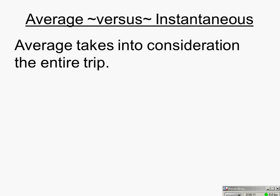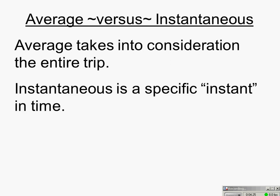Average takes into consideration the entire trip. You look at your odometer, see how far you went, divide by total time, and that gives your average speed. Instantaneous is your specific speed at some instant in time — so when you get pulled over for going 70 miles an hour in a 65, you were going 70 at that moment. We can also find instantaneous velocity at the beginning or end of a trip, while average considers the entire time.